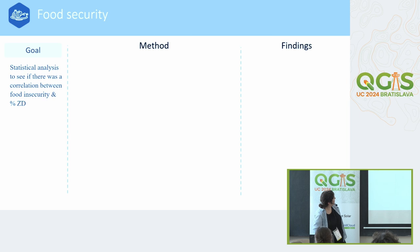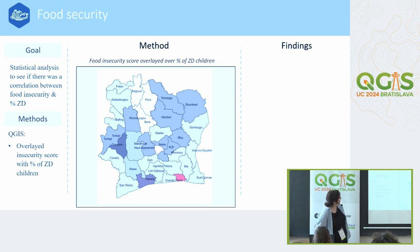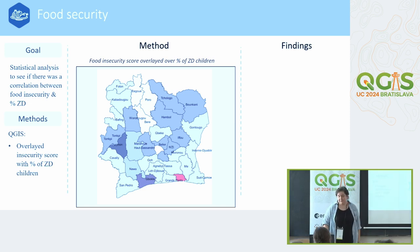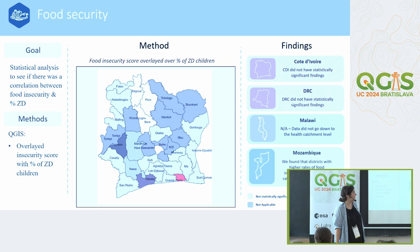The next analysis was food insecurity, using a score from the ICSP. We ran a statistical analysis to see if there was a correlation between the food insecurity score and the percentage of zero-dose children, and first overlaid both onto a map. In Côte d'Ivoire, we only found a small crossover area—high zero-dose rates alongside high food insecurity—so it wasn't a statistically significant finding, but interesting to visualize how the two variables interact. In CDI and DRC, no statistically significant findings. In Malawi, the data didn't go down to the health catchment level, so we couldn't use it. In Mozambique, we did find a correlation.